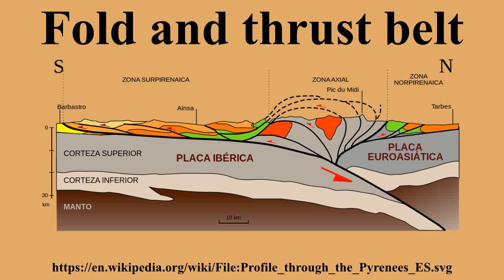Fold-and-thrust belts are formed of a series of sub-parallel thrust sheets separated by major thrust faults. As the total shortening increases in a fold-and-thrust belt, the belt propagates into its foreland. New thrusts develop at the front of the belt, folding the older thrusts that have become inactive. This sequential propagation of thrusts into the foreland is the most common pattern.